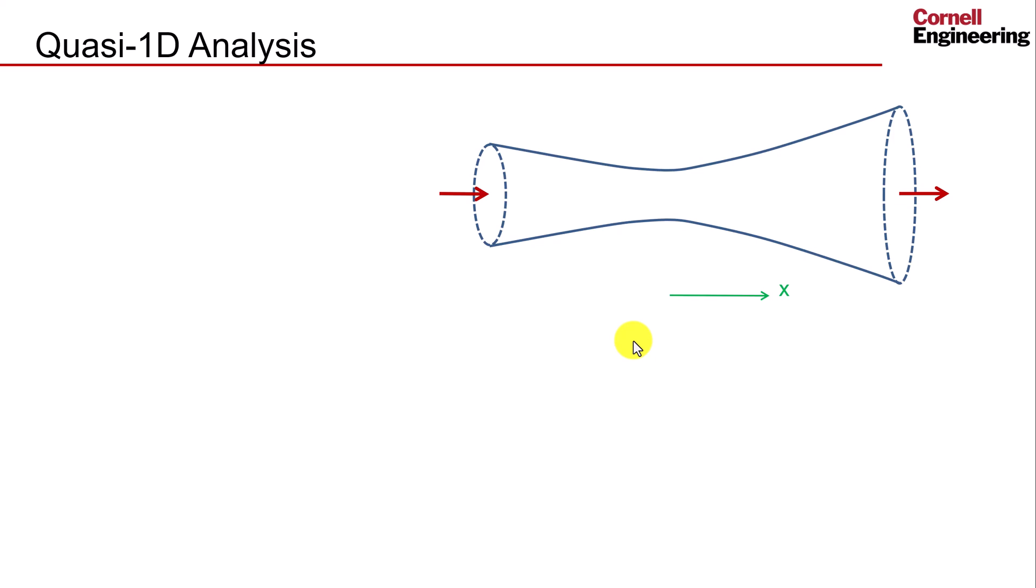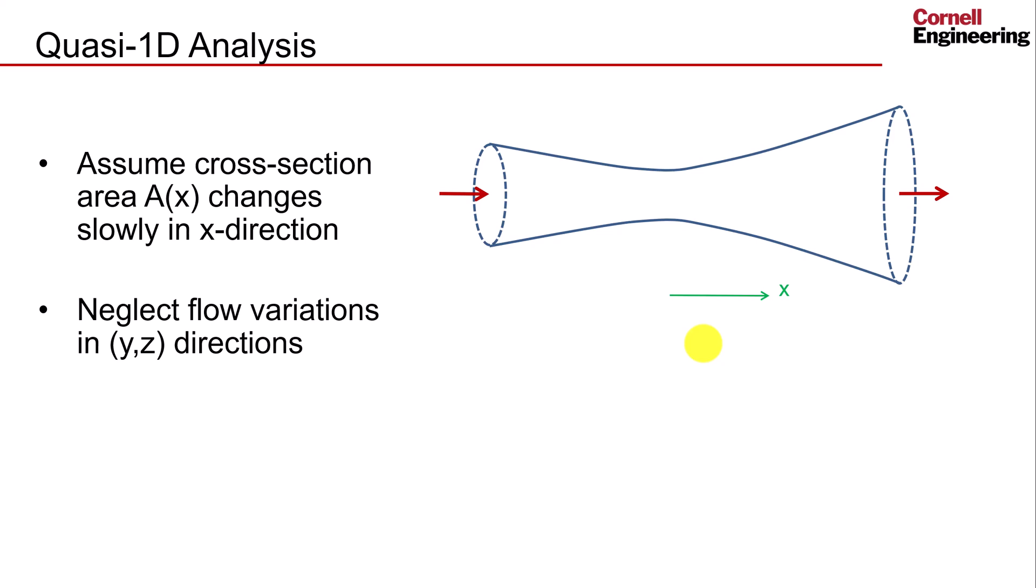The flow through the nozzle can be simplified to gain intuition by using a quasi-1D analysis. For this, we assume that the cross-sectional area A changes slowly in the axial direction, which is labeled as x here. This means that, even though we know the area changes, we assume that the flow does not change direction significantly as the area varies. This means we neglect flow variations in every direction but in the x direction.